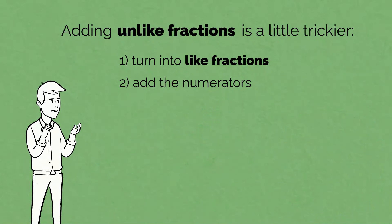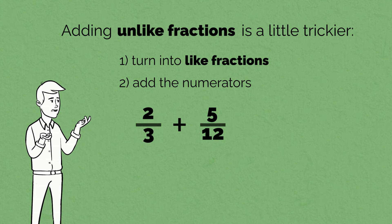Let's have another go of adding unlike fractions. 2 thirds plus 5 twelfths. These two fractions are unlike, so we can't simply add the top numbers. We have to change them to like fractions first.